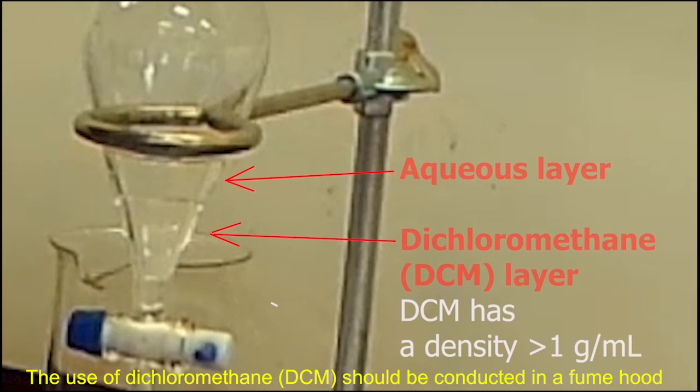For example, since the densities of halogenated organic solvents such as DCM are higher than that of water, DCM will rest on the bottom. So the water droplets will mix with the top layer.